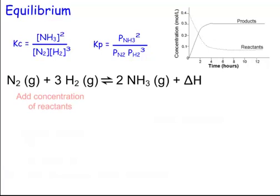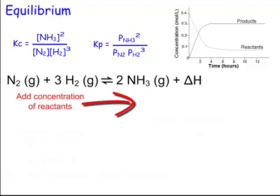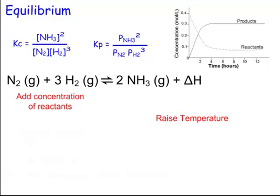Le Chatelier's principle says if we add concentration to the reactants, it's going to shift to the right, to the products — it's going to make more ammonia. If you take away concentration of the reactants, it does the exact opposite and produces more reactants. We could also raise the temperature. If it's exothermic, heat is a product, so raising the temperature pushes it away from heat — it's going to produce more reactants and shift to the left.